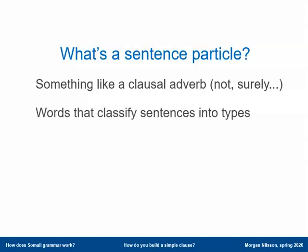In Somali, we have words that classify sentences into different types. First, there is a very common little word in Somali, 'waa,' that basically tells us that the clause is something we either claim or ask for information about. So 'waa' is most often encountered in declarative clauses, but also in questions with WH words — what, why, and things like that.